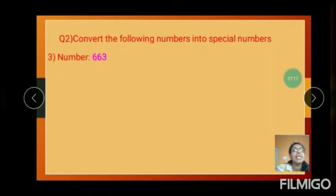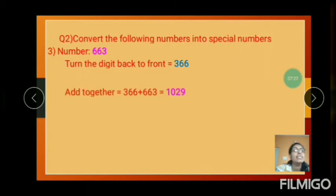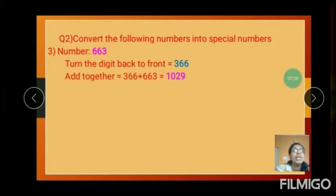And next number is 666. Turn the digit back to front: 366. Add together: 366 plus 663. The number is 1029.